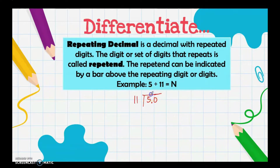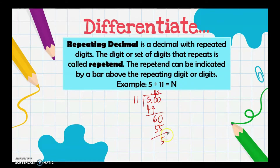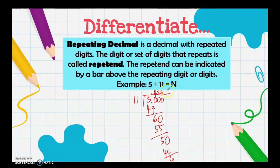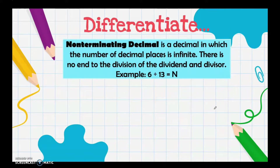Since we cannot divide, we add a decimal point and zero. We get 4, then 44, remainder 6. Add more zeros: we get 5, then 55, remainder 5. As we bring down more zeros, it repeats — back to 60, then 50, then 60 again. The answer always repeats as 45, so we write 0.45 with a bar above, meaning it is 0.454545... and so on.